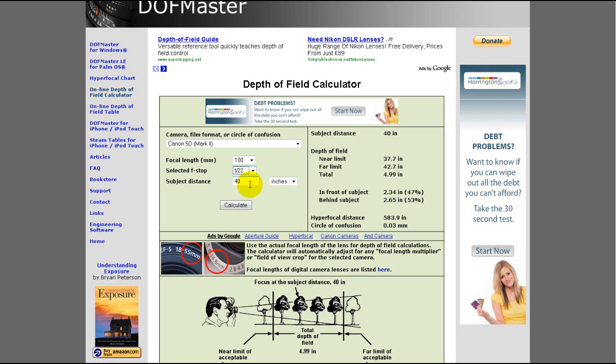You can see there by using those settings and moving back, we've now got a depth of field of 4.99 inches. So that would cover the whole depth of that object. But you can see here how useful this tool would be.